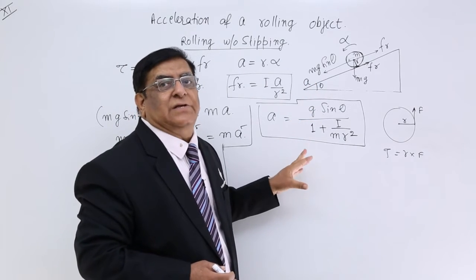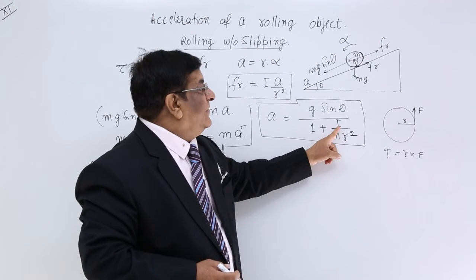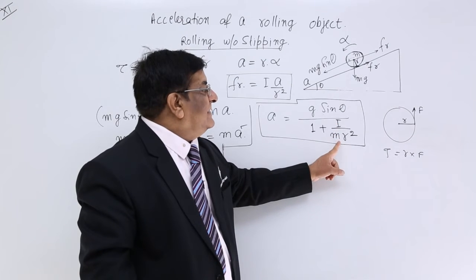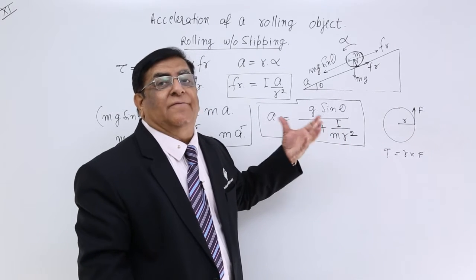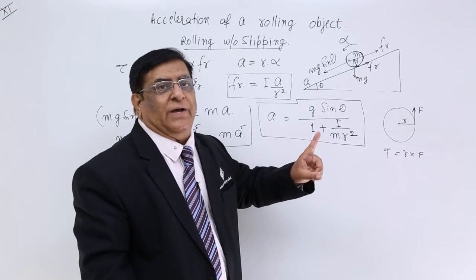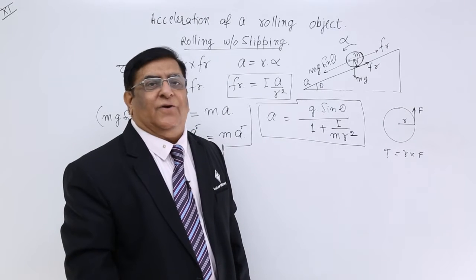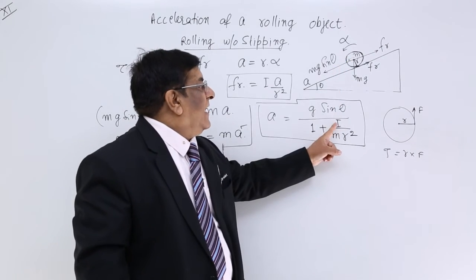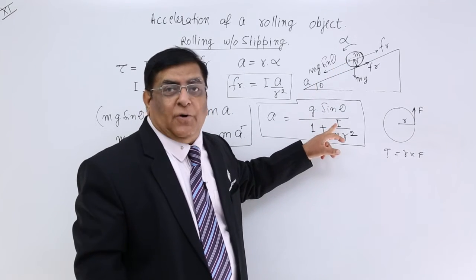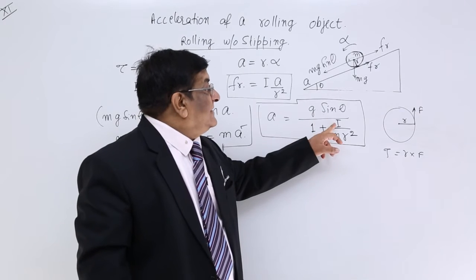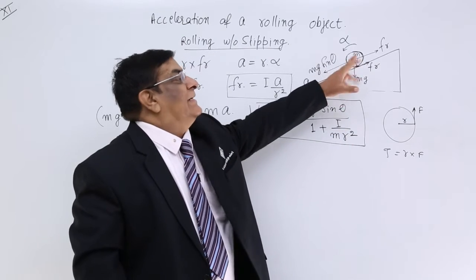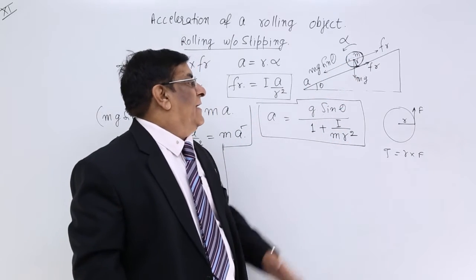Students are mostly confused that moment of inertia has the formula MR squared. If we write MR squared here, it would cancel with MR squared in the denominator. But we cannot do so because I equals MR squared is only for the ring, not for other shapes. For a disc, it is half MR squared; for a sphere, it is 2 upon 5 MR squared. So I has different values.